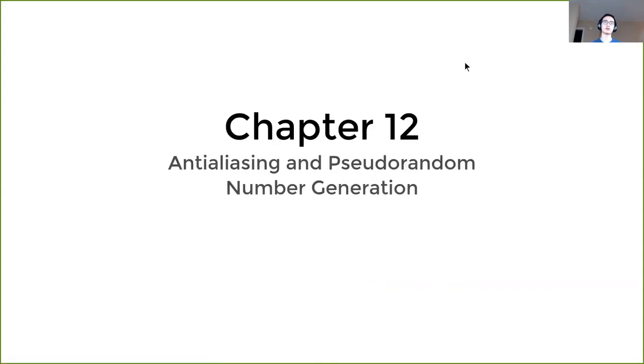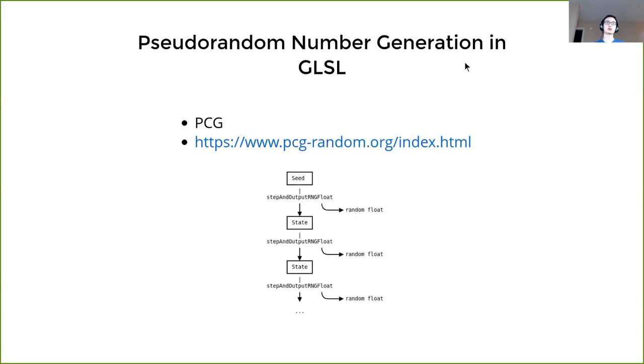Chapter 12 is anti-aliasing and pseudo-random number generators. Currently we only have one sample per pixel and we always generate it at the corner of each pixel square, but we can have some randomized samples by generating random numbers.